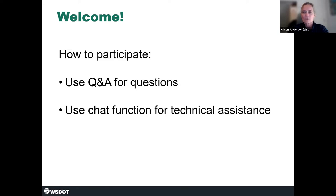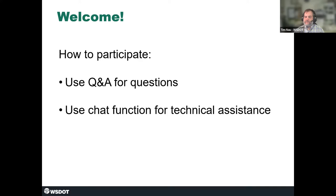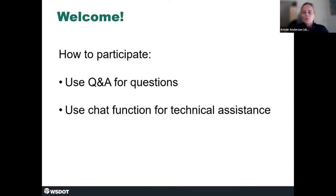Before we get started, we wanted to cover a few tips on how to use Zoom. If you'd like to use closed captions, click on the live transcript button in the toolbar at the bottom of your screen, then click Show Subtitles. All of you are muted to reduce background noise. If you're having any issues with volume, click the microphone button at the bottom left. Use the chat button for other technical issues and our technical team will respond.